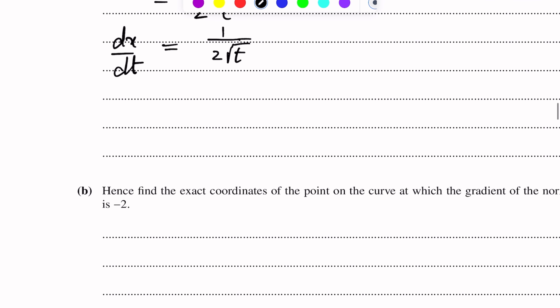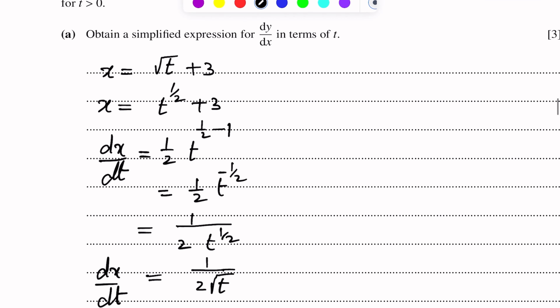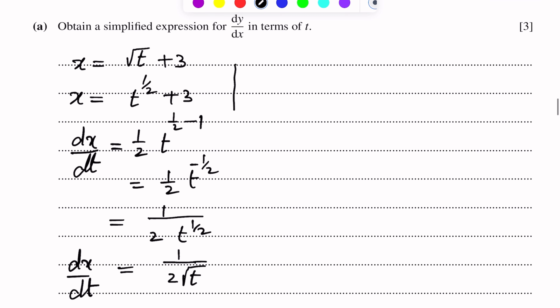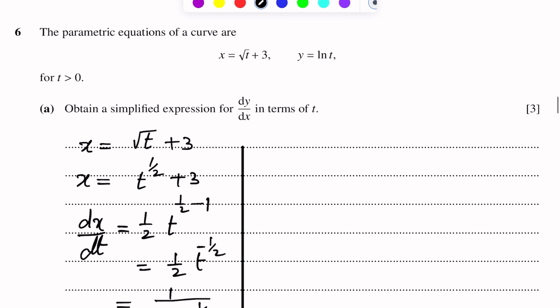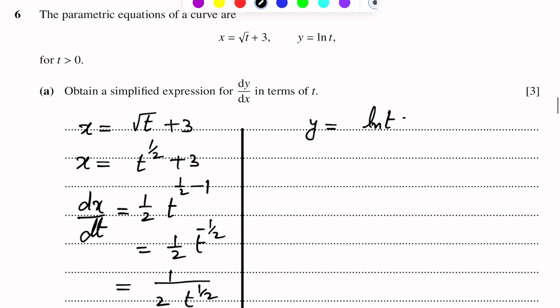x equals t to the power 1 over 2, plus 3. So dx over dt equals 1 over 2 times t to the power negative 1 over 2, which simplifies to 1 over 2 square root t.